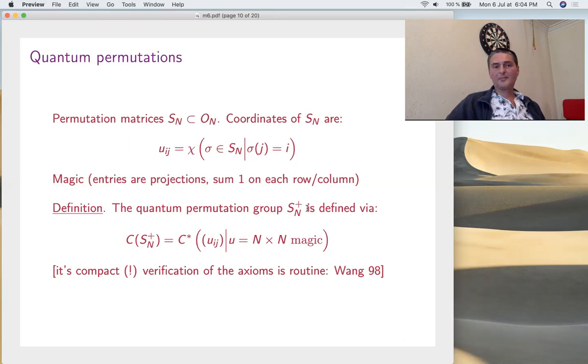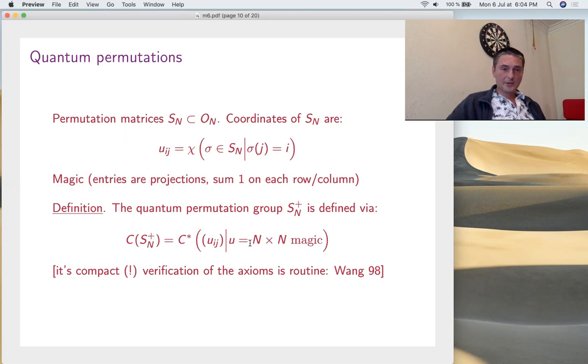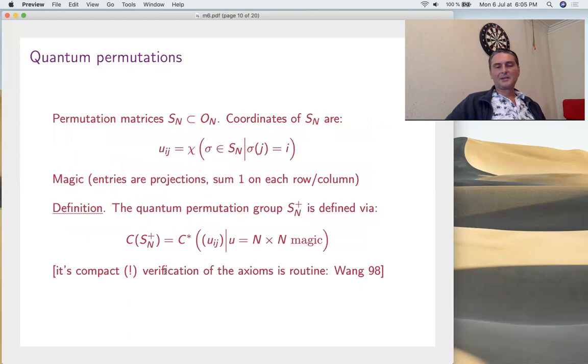Let's get to permutations. Regarding permutations, we need algebraic groups everywhere. We regard permutation groups as permuting the coordinate axes in R^n, like permutation matrices. Let's look a bit at this matrix. The entries commute, but what else can be said? There are projections, because they take values zero or one. The coordinates are self-adjoint and idempotent, so they are projections. Also on each row and column they sum up to one, because you have only one 1 and the others are 0. So now let's call a matrix magic if the entries are projections summing up to one on each row and column, and let's define the universal algebra generated by the entries of a magic matrix which no longer commute.